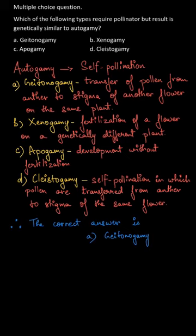Therefore, the correct answer is A, that is geitonogamy, because it will require a pollinator and the result will also be genetically similar to autogamy.